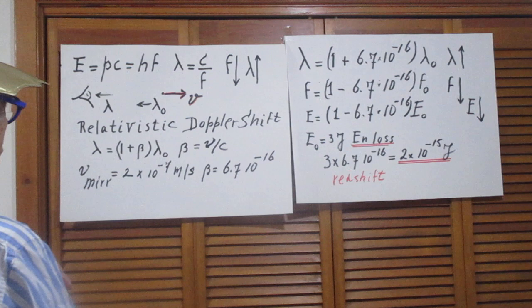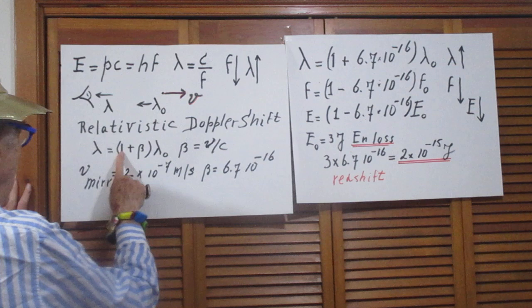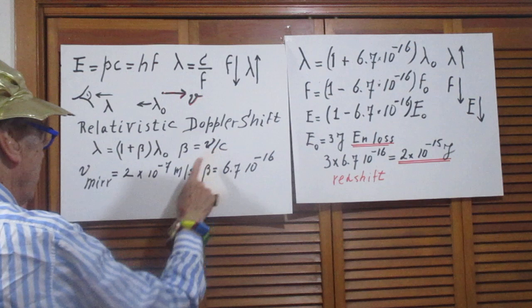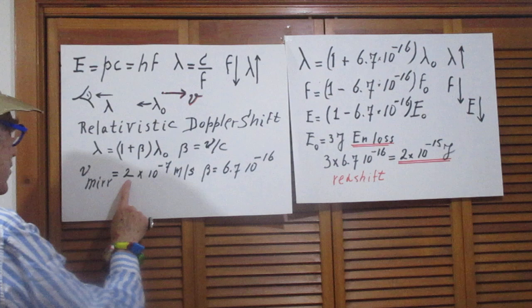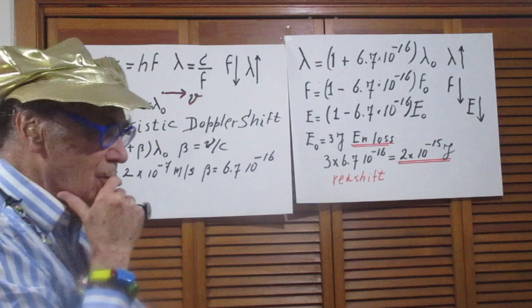In that case, the relativistic Doppler shift is: the lambda that I receive is 1 plus beta times lambda zero, and beta is V over C. Since the speed of the mirror is 2 times 10 to the minus 7 meters per second, beta is 6.7 times 10 to the minus 16, way smaller than 1.